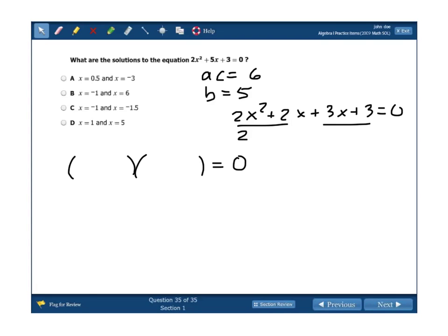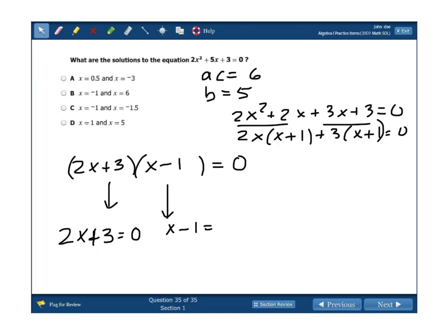Factor out the GCF here and here: 2x leaving x + 1, 3 leaving x + 1. So my factored form, 2x + 3 and x - 1. Keep in mind the next step is to use that zero product property, setting those equal to 0 and solving. In this case, we end up with negative 3 divided by 2, negative 3 halves. And you can see negative 3 halves is negative 1 and a half and 1 right there.